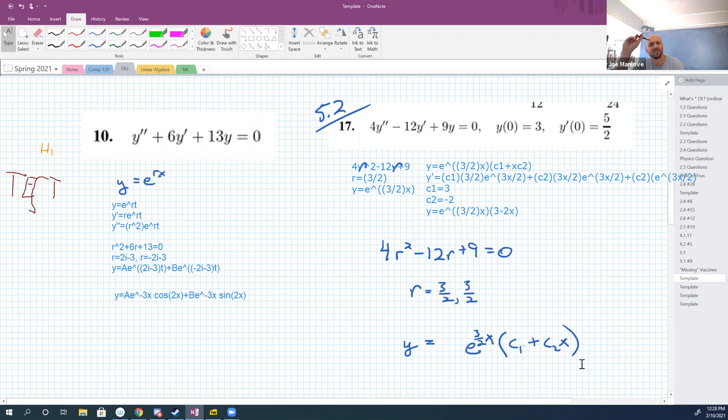Why am I solving for c's? Well, since it's an initial value problem, you want to find an exact equation. Okay, so because I have initial conditions, I should be able to solve for the c's, which would give you the exact equation.